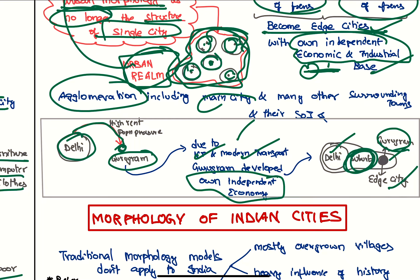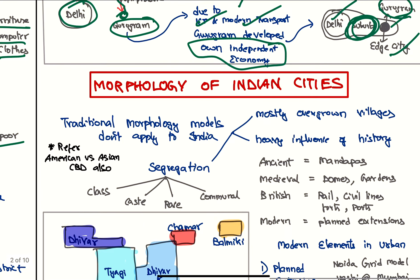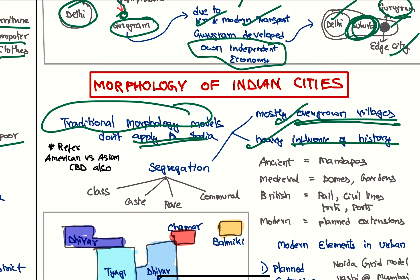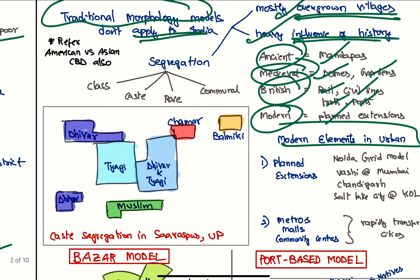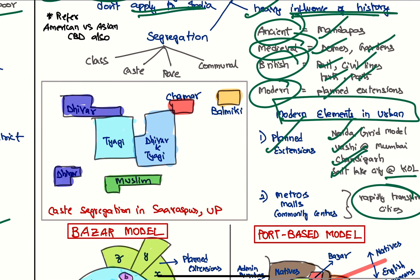Next we have the morphology of Indian cities. Traditional morphology models don't apply to India because Indian cities are mostly overgrown villages and they have heavy influence of history. For example, mandapas in ancient times, domes and gardens in medieval times, rail, civil lines, forts, and ports in British times, planned extensions in modern times. Also, the modern elements in urban planning are planned extensions which can be seen in Noida as grid model, Navi Mumbai, Chandigarh, Salt Lake City in Kolkata. Some new elements which are rapidly transforming cities are metros, malls, and community centers.